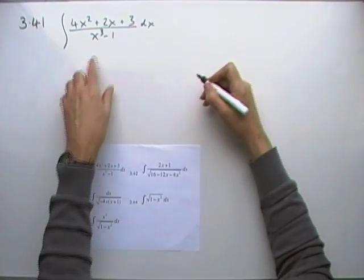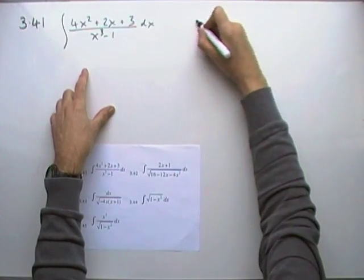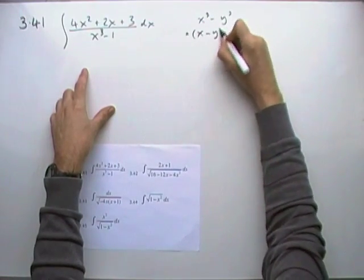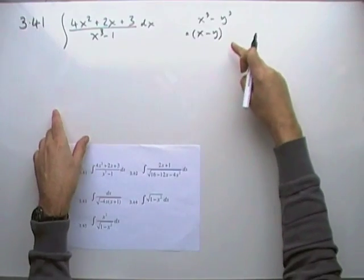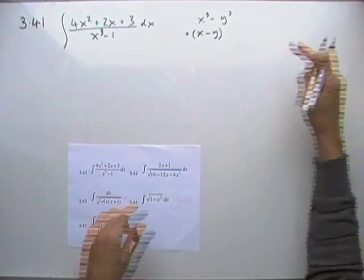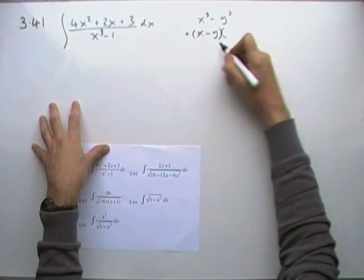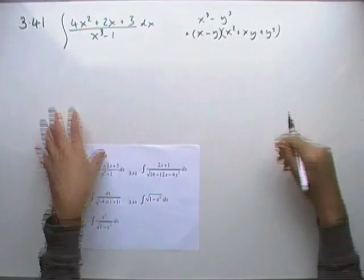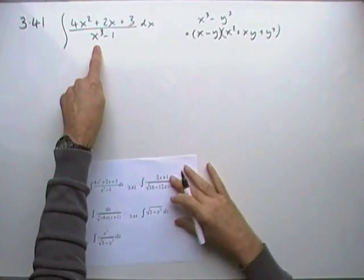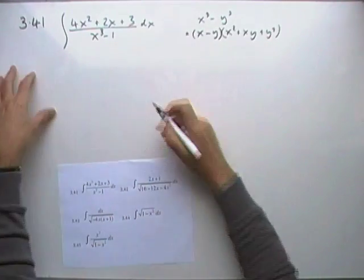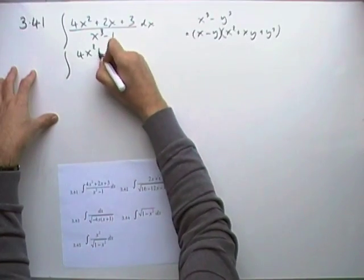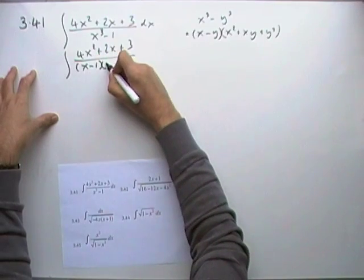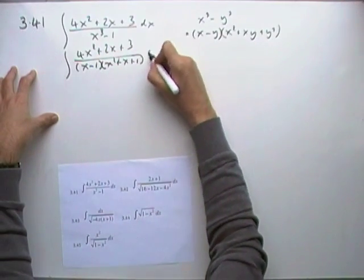You know the difference of two squares. There's also a pattern for the difference of two cubes: if you've got x cubed minus y cubed, the factorisation is x minus y times x squared plus xy plus y squared — just like x squared minus y squared is x minus y times x plus y. So for this denominator, I've got 4x squared plus 2x plus 3, and that bottom becomes x minus 1 times x squared plus x plus 1.